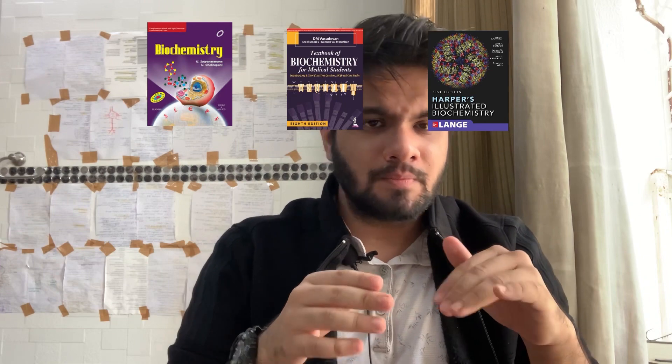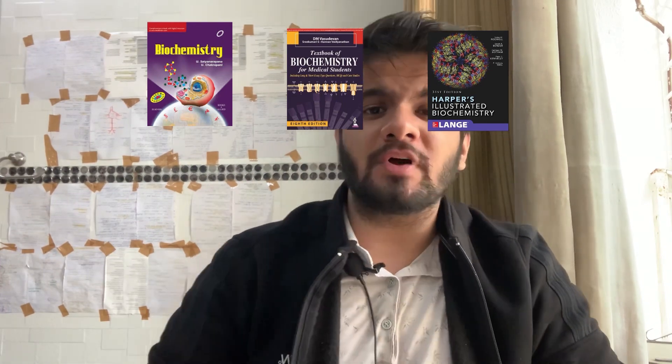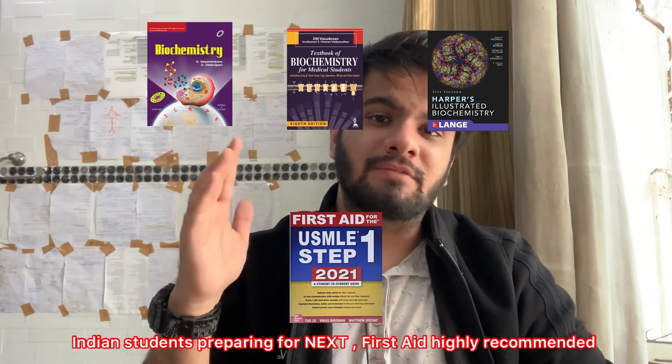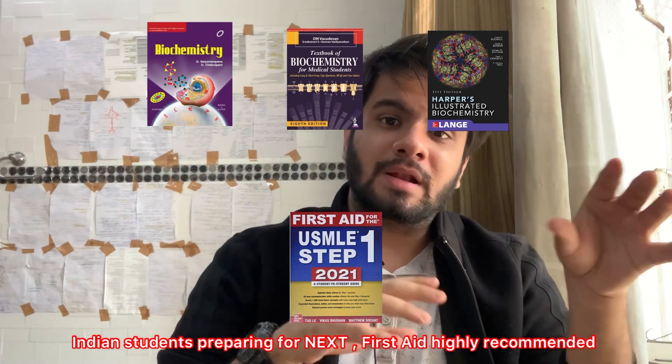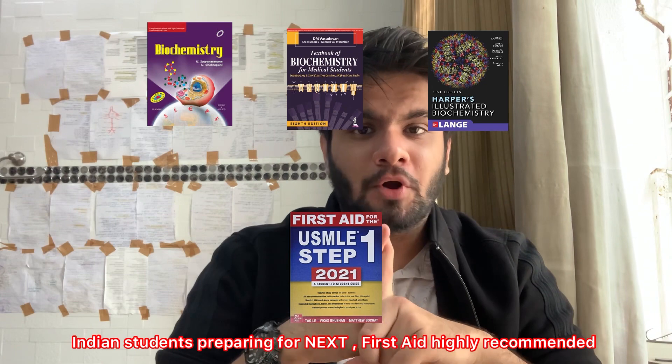Our suggestion would be: first, go through any one of the three books — select whichever you prefer and read it once. Then get First Aid, because First Aid has simplified clinical conditions and presents information in a way that helps you remember things clinically. Before video resources, we would suggest going for Physio, because Physio presents information in a sketchy form — it is essentially a sketchy resource for biochemistry.